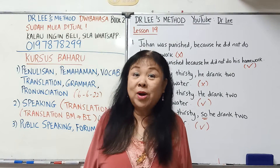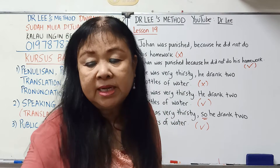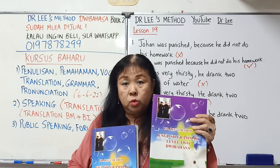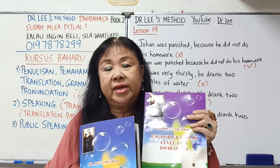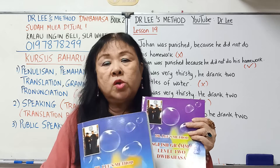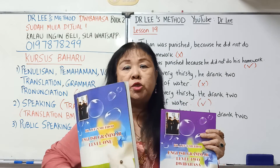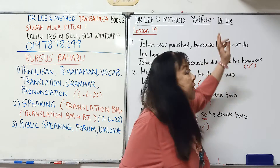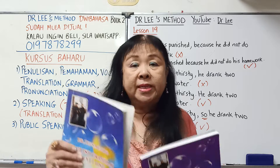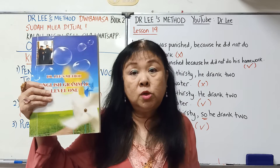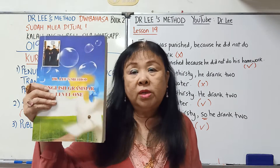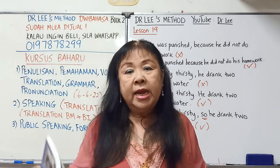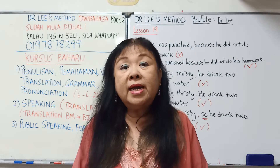我写了这两份书，一个是 Book One，一个是 Book Two。Book Two 有巴哈萨版（双语），就是有英文跟马来文的；而 Book One 全全是英文。Book One 我已经在 YouTube 上放了视频，解释每一页每一题。至于对应巴哈萨的 Level Two 呢，在卖着。